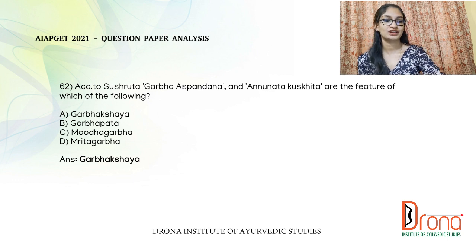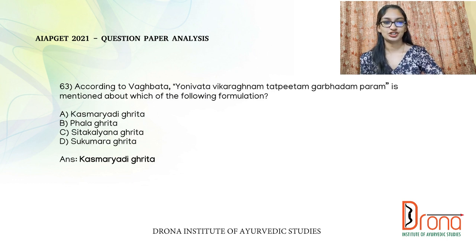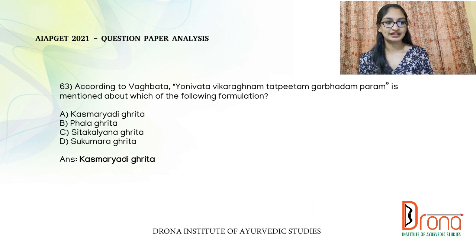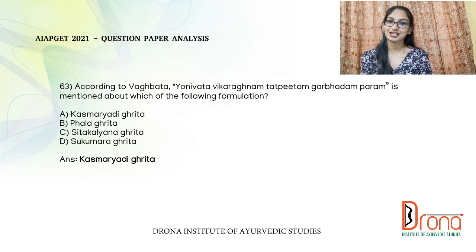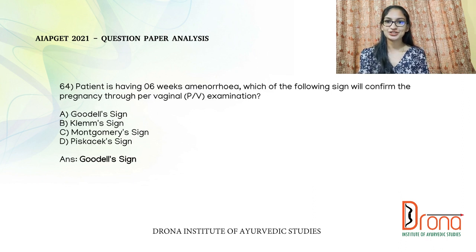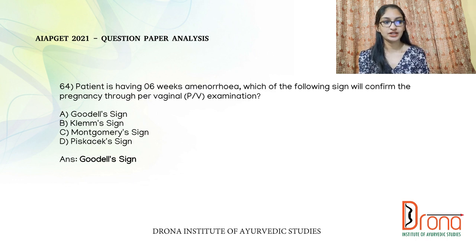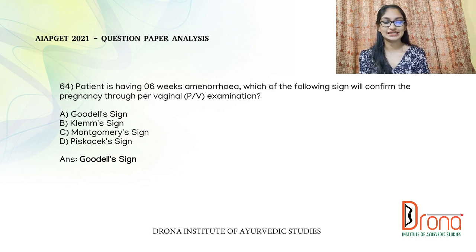By this it is clear that garba aspandanam and anunnata kukshita are the features of Garbha Kshaya Lakshana. The next direct question: according to Vagbhata, 'yoni vata vikareknam tat peetam garbhadam param' — this is the phalashruti of Kashmer Yadi Gradam.